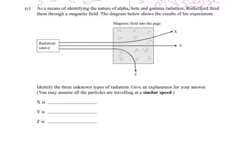And we have to identify the three unknown types of radiation and give an explanation for your answer. You may assume all the particles are traveling at a similar speed. That's pretty important, because usually a beta particle is traveling nine times faster than an alpha particle, and that affects our trajectory.